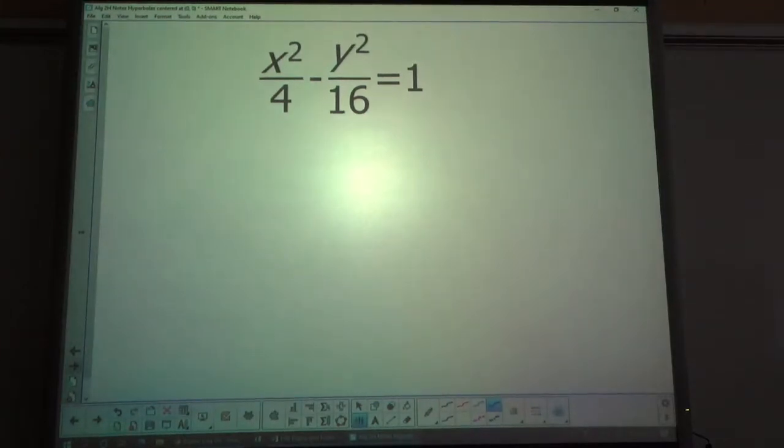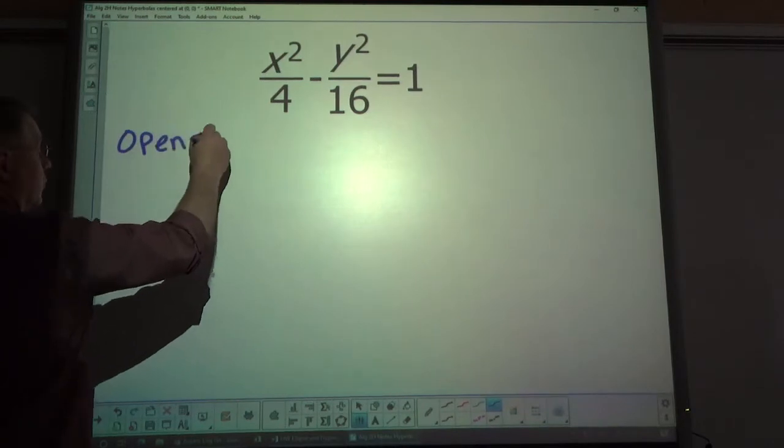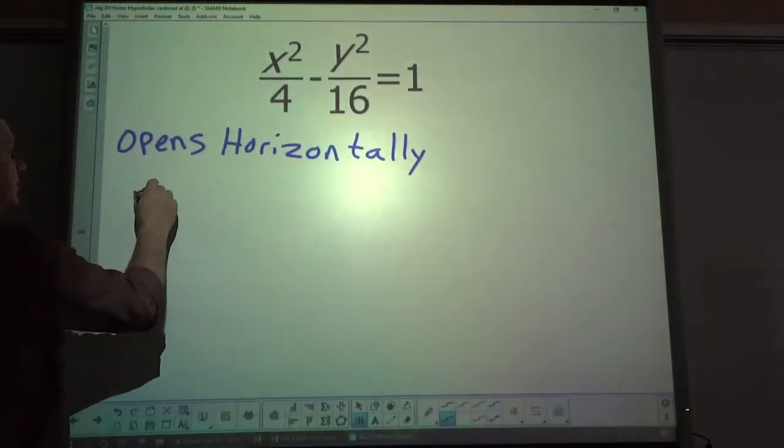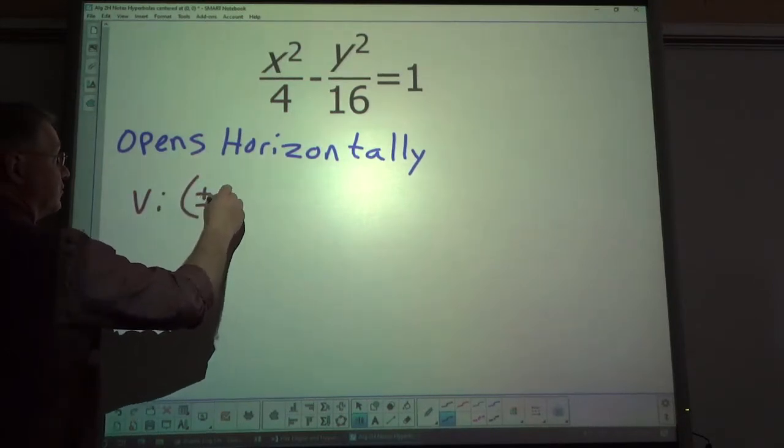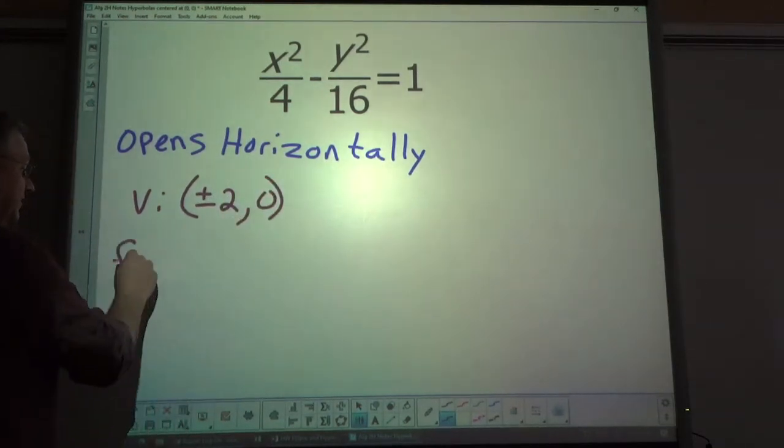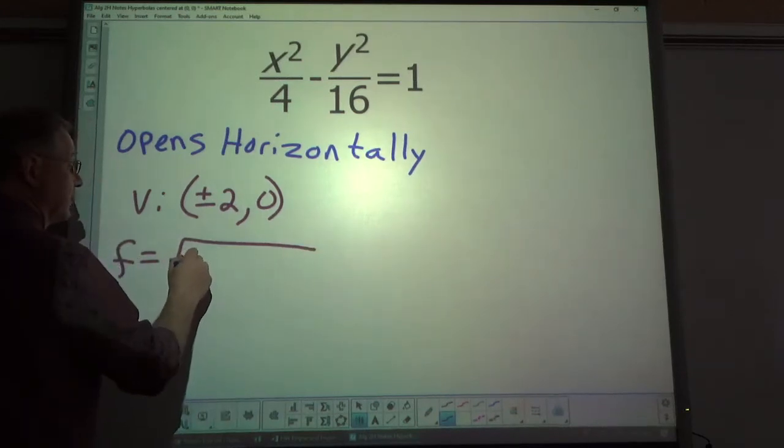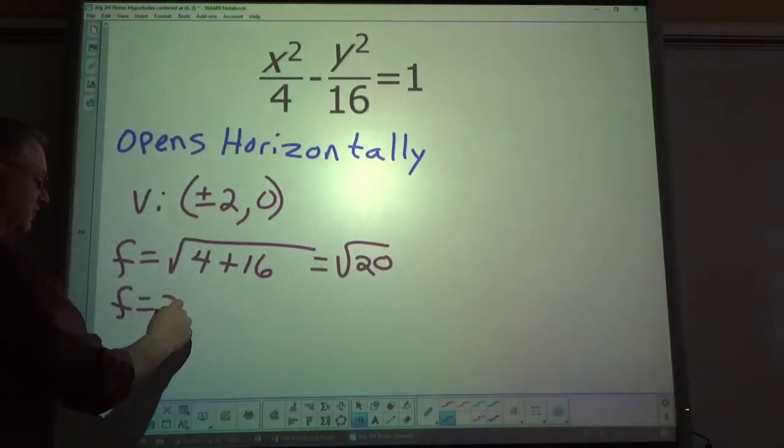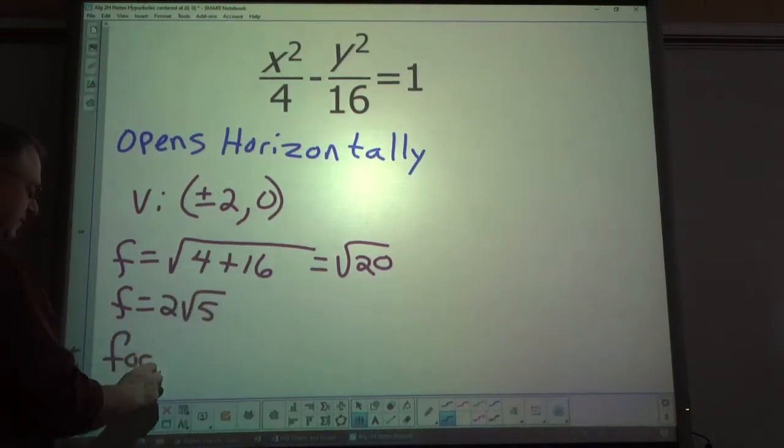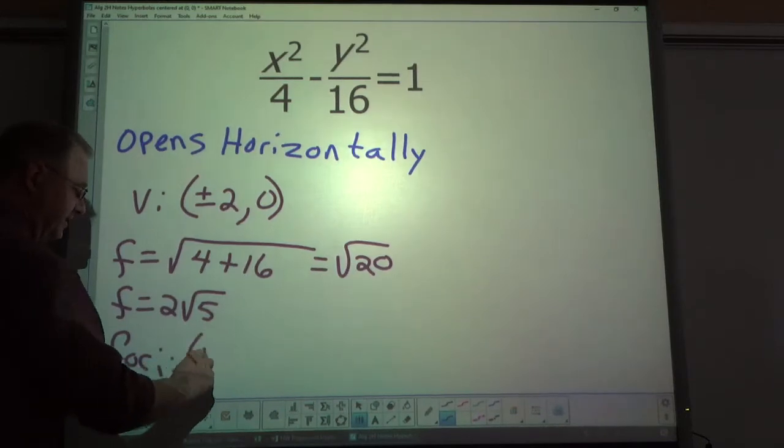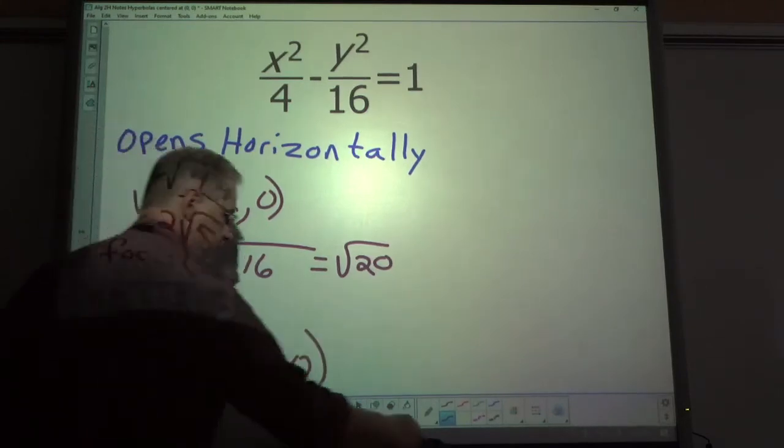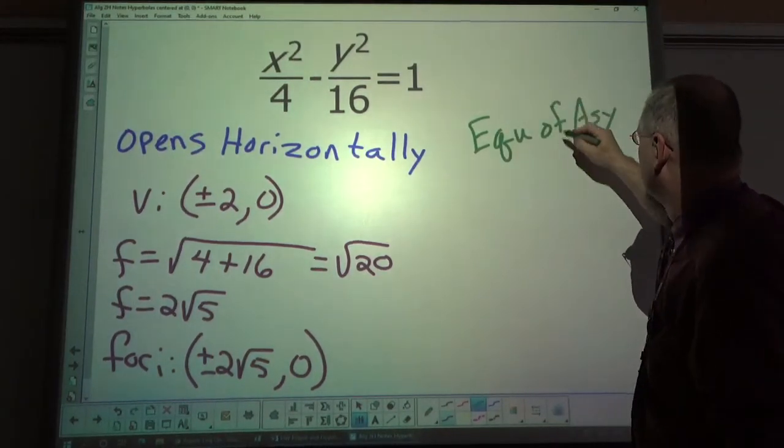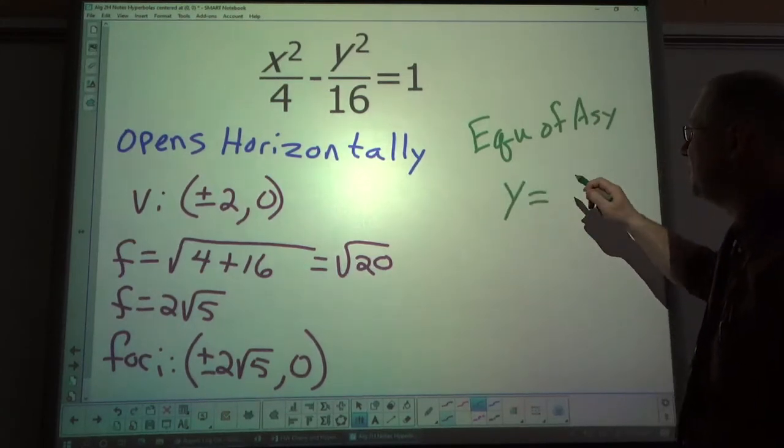Here is the first example. Since x is listed first in the subtraction, it's opening horizontally. The vertices are going to be at plus or minus 2, square root of 4. 2 is a, 0. So, f is found by taking the square root of a squared plus b squared. In this case, square root of 20. So, f is 2 square root of 5. So, foci is at plus or minus 2 square root of 5, comma, 0.